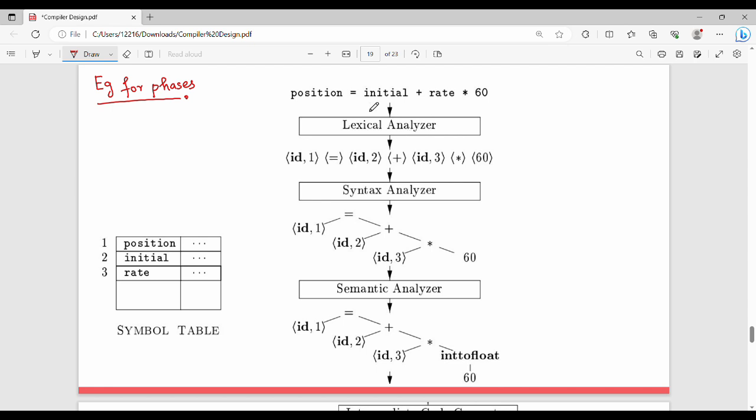The input source program is position equal to initial plus rate into 60. This is the initial source program. What do we do with lexical analyzer? This produces tokens. Where are the tokens?